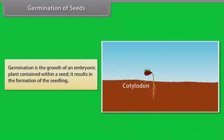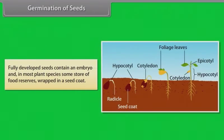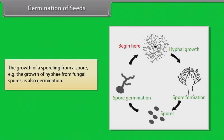Germination is the growth of an embryonic plant contained within a seed; it results in the formation of the seedling. Fully developed seeds contain an embryo and, in most plant species, some store of food reserves wrapped in a seed coat. The growth of a sporeling from a spore — for example, the growth of hyphae from fungal spores — is also called germination.